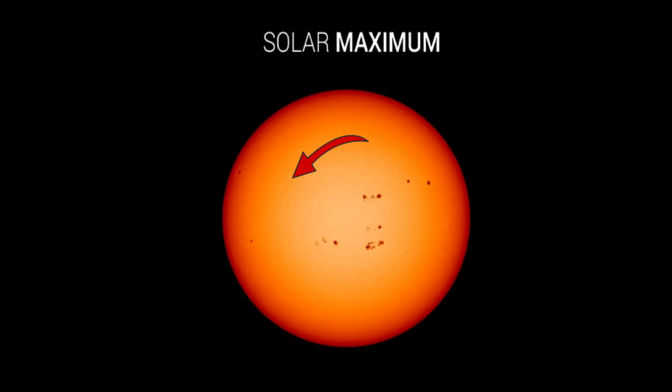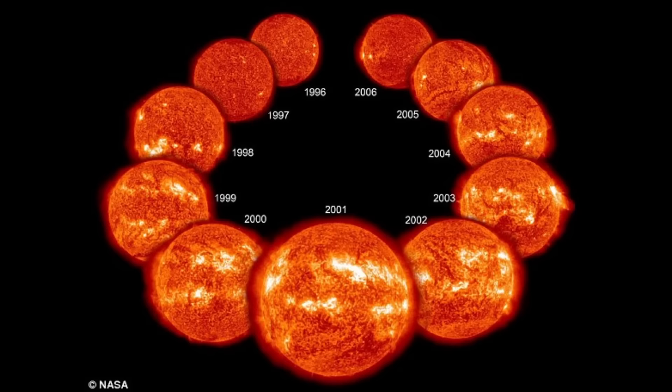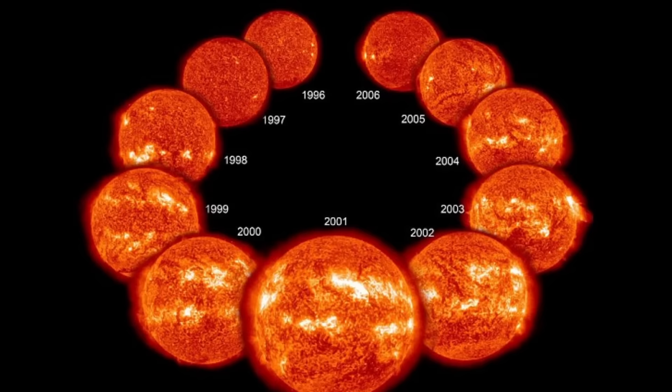As the cycle ends, it fades back to the solar minimum, and then a new cycle begins. Here you can see the increase in the number of sunspots during the solar maximum phases of 2001 compared to the weak phases of 1996 or 2006.